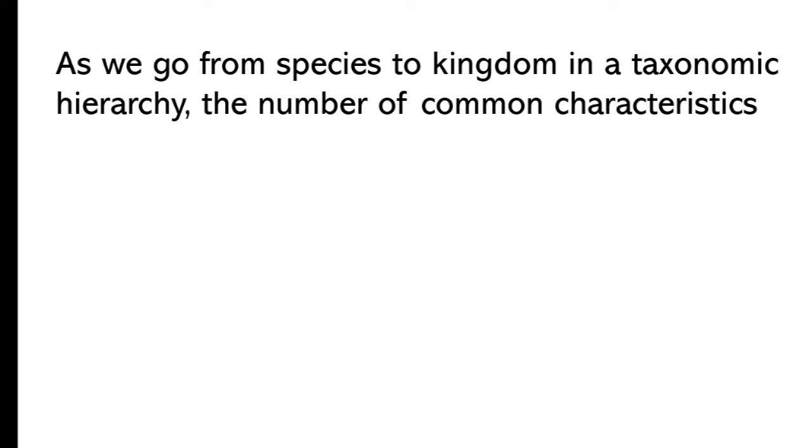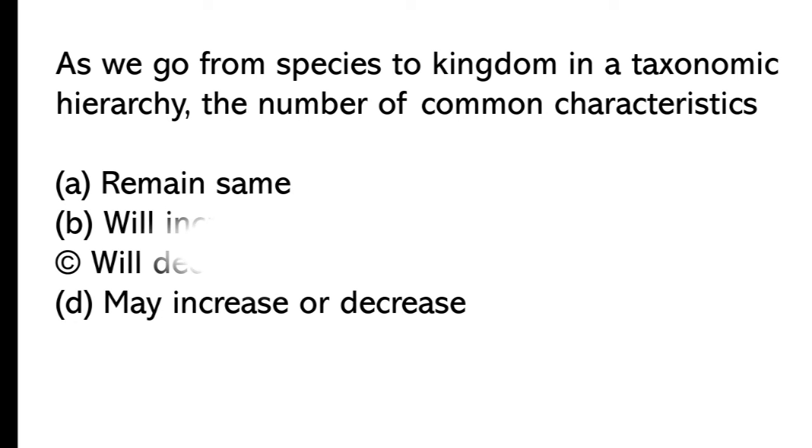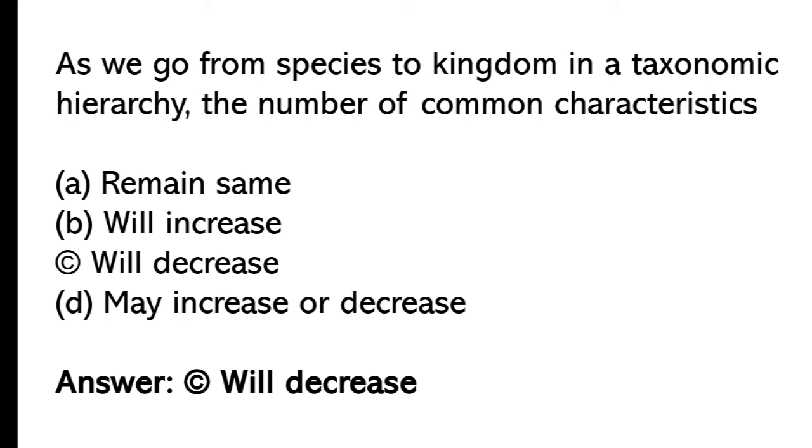As we go from species to kingdom in a taxonomic hierarchy, the number of common characteristics: remain same, will increase, will decrease, may increase or decrease. So the correct answer is option C, will decrease.